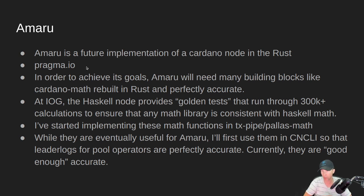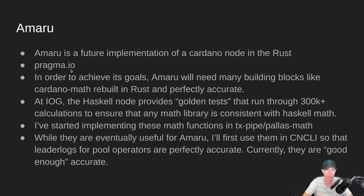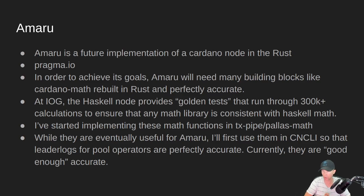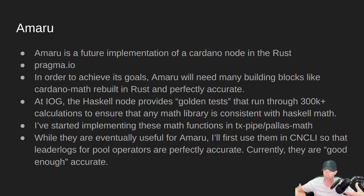The Rust node will have a different audience. If you want to learn more, you can go to pragma.io — a group of different companies and labs that have come together to work on the Amaru node. To achieve its goals, Amaru is going to need many different building blocks, like Cardano Math rebuilt in Rust to be perfectly accurate so it can reach consensus with the Haskell nodes. At IOG, the Haskell node team has provided what they call golden tests — tests that run through a ton of math calculations. If you can implement these same golden tests with your math library, you can be very sure that your Rust-side math is consistent with the Haskell node's math, ensuring both nodes can reach consensus.